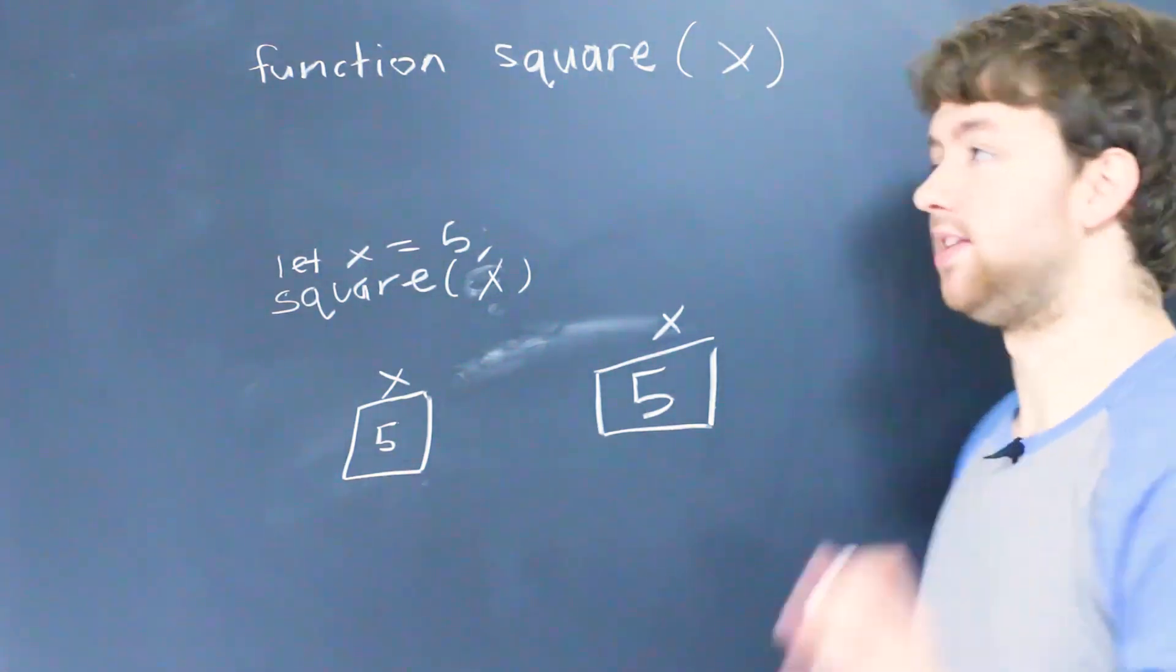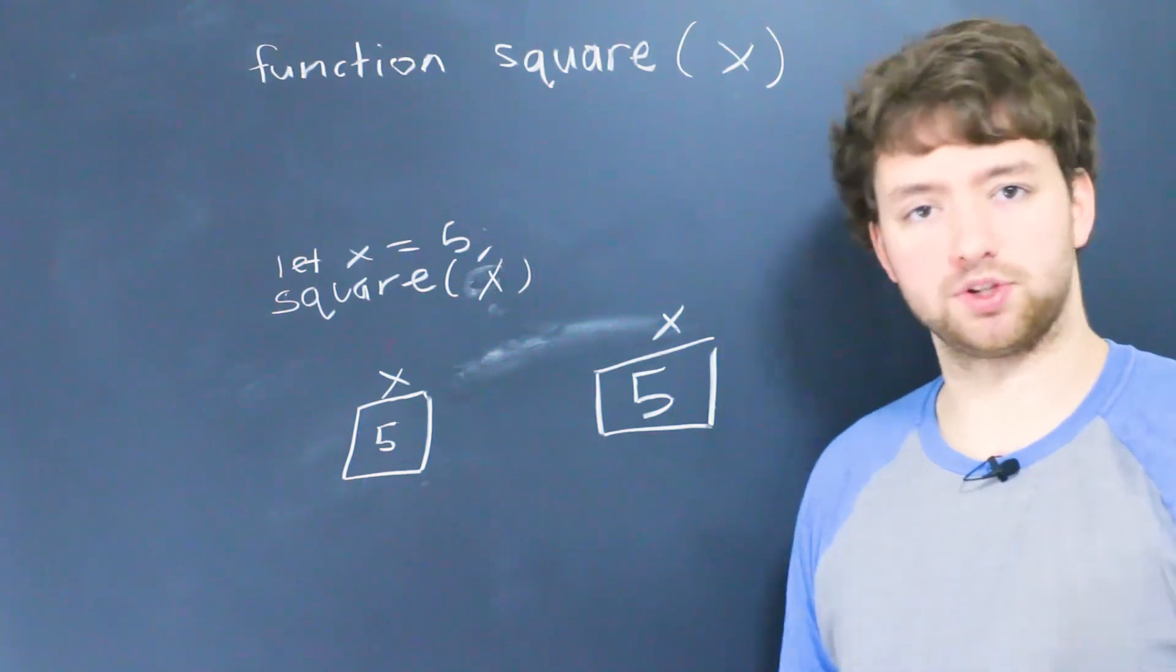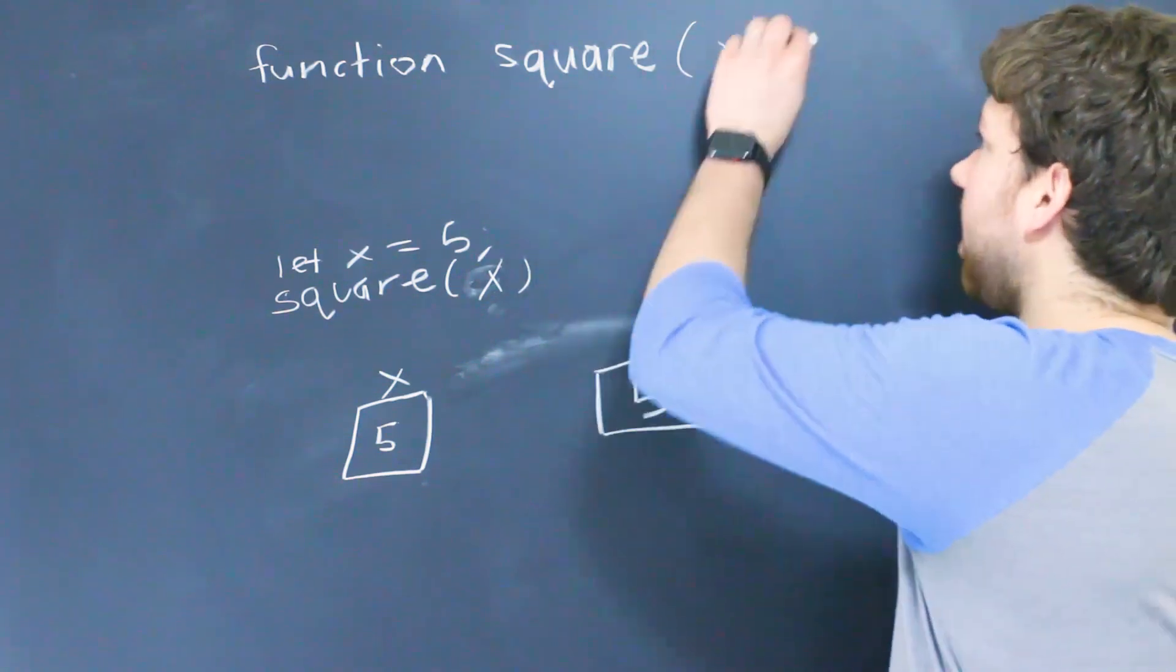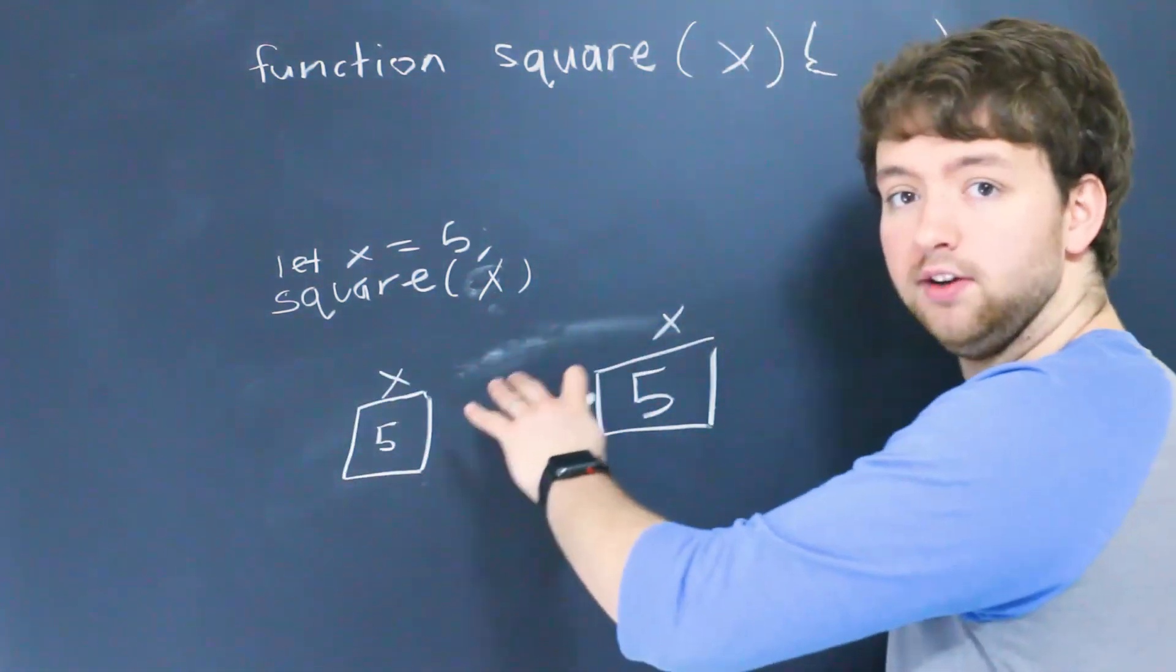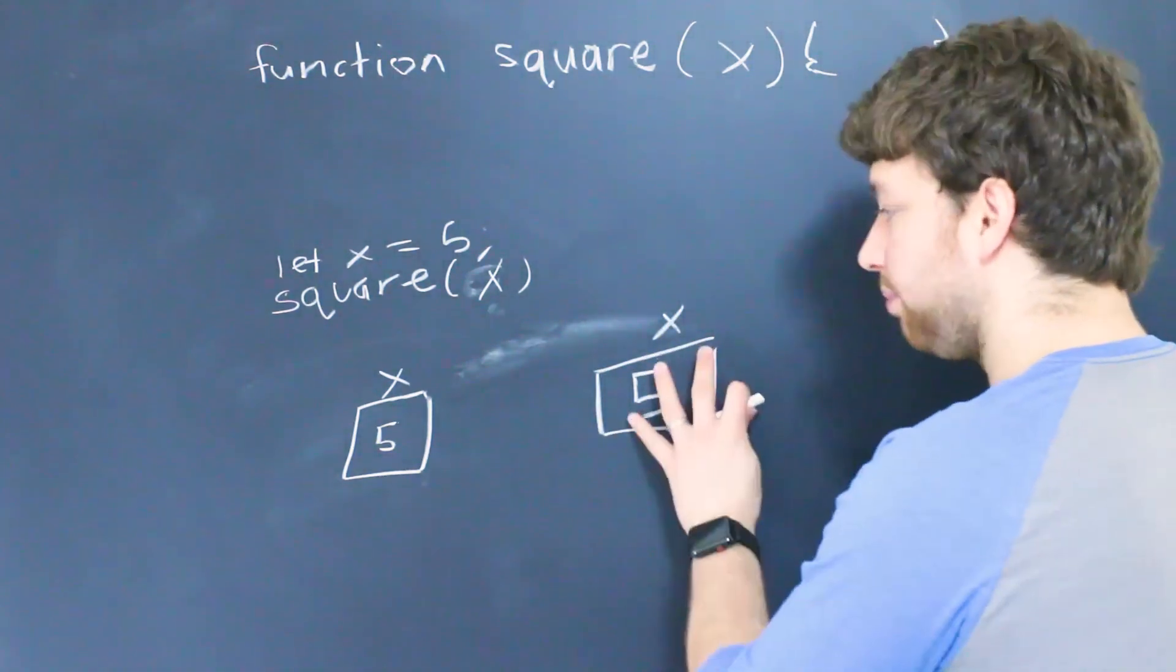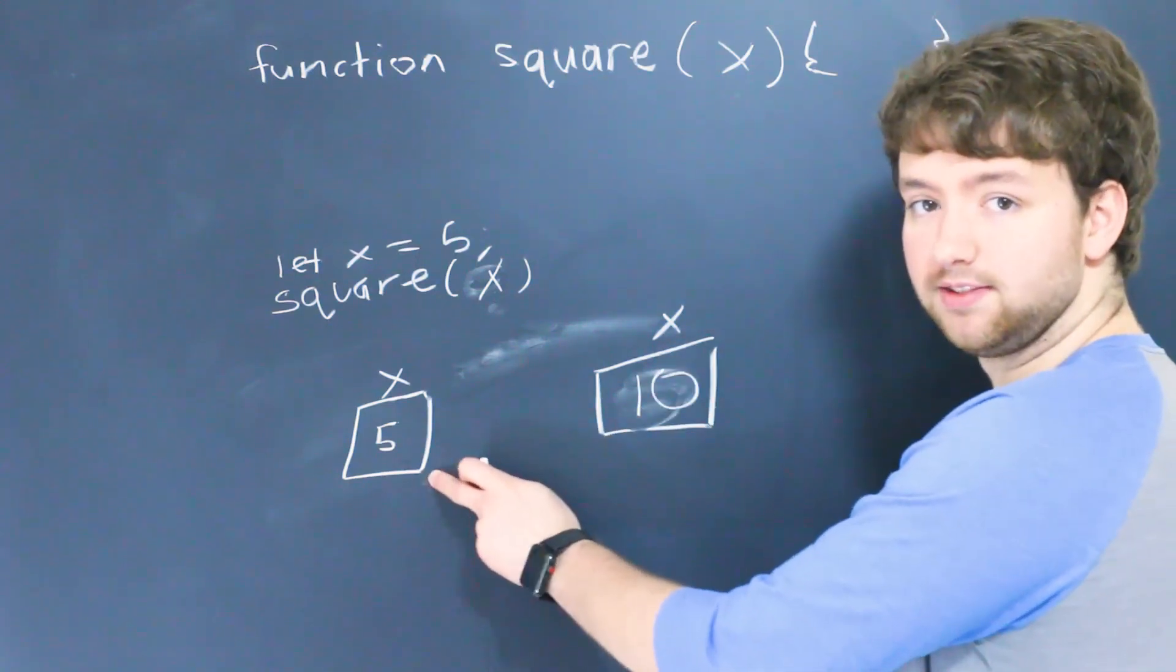So what that means is any changes to this variable inside of this function do not persist outside of the function. So if we change X inside of the square function and then we use X down here the value of X is still going to be 5. That's because the value's copied so if we change this well the original one stays the same.